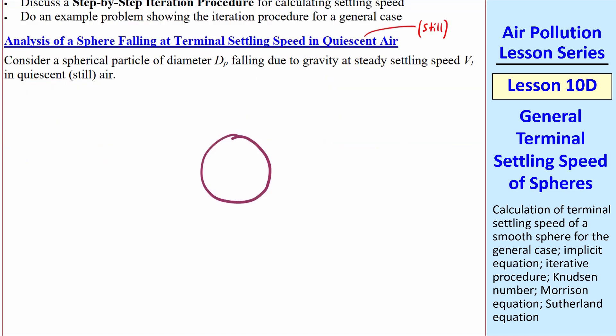Consider a spherical particle of diameter dp and density ρp, where subscript p stands for particle. This sphere is in air, where z is up and gravity vector g is down.